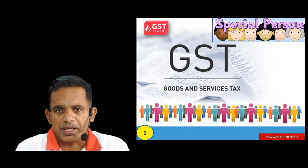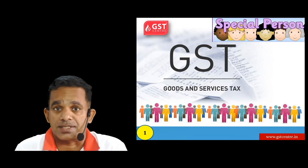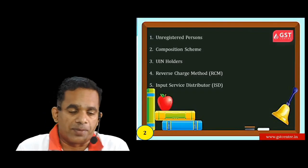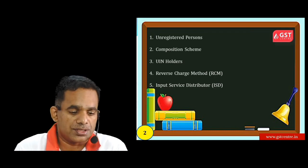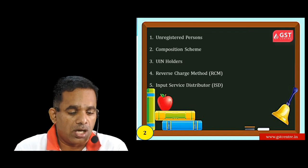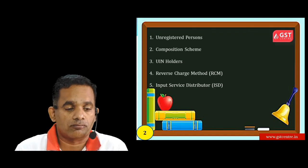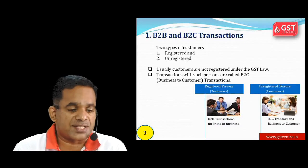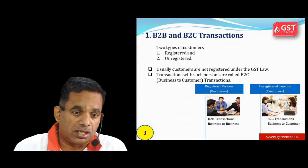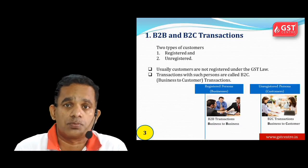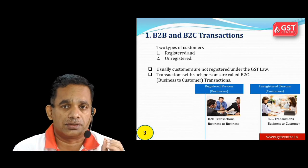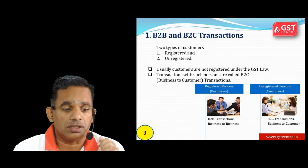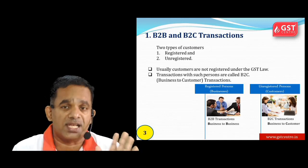Hi, in this video we will see different types of transactions about unregistered persons, composition scheme, UEN holders, reverse charge method, input service distribution, B2B and B2C transactions. B2B means Business to Business and B2C means Business to Customer.